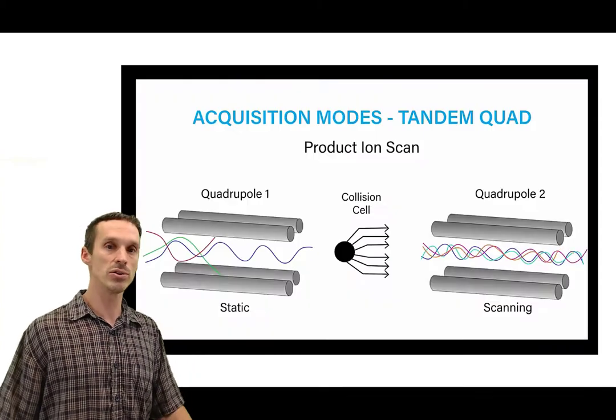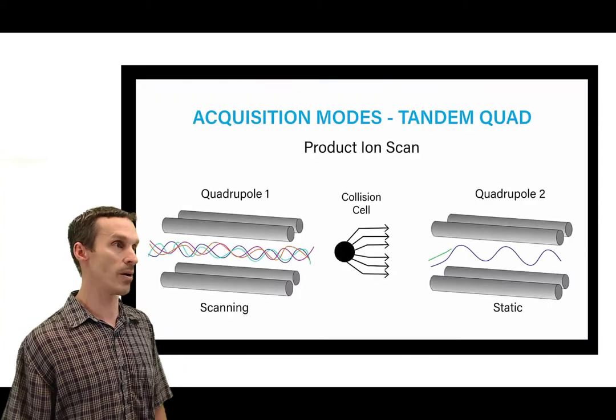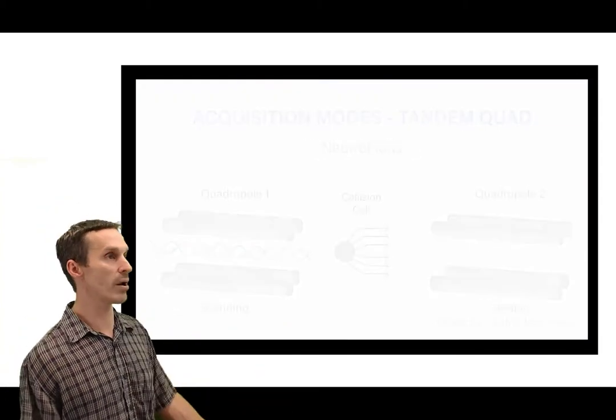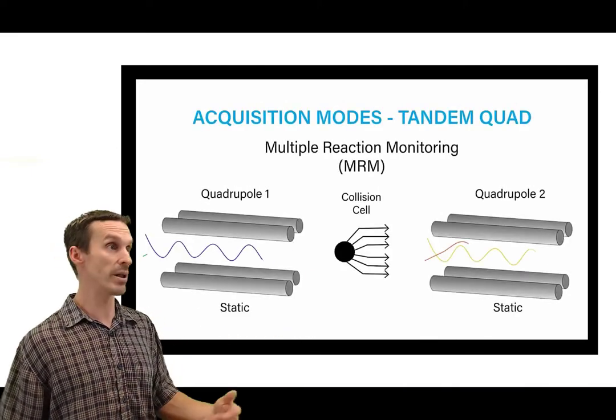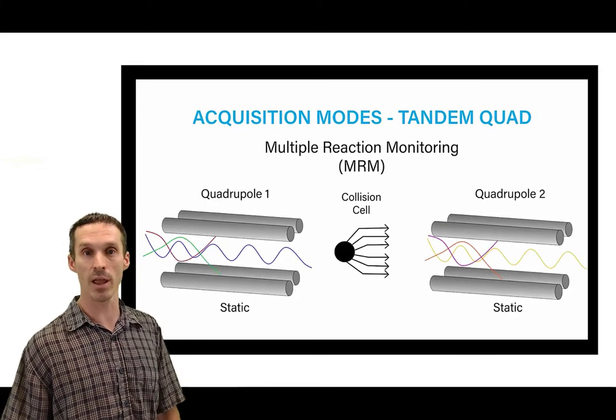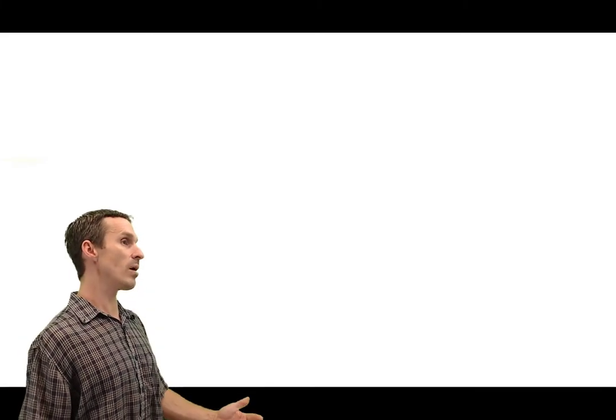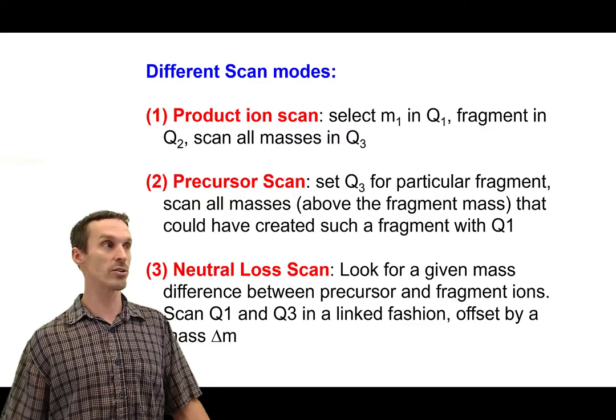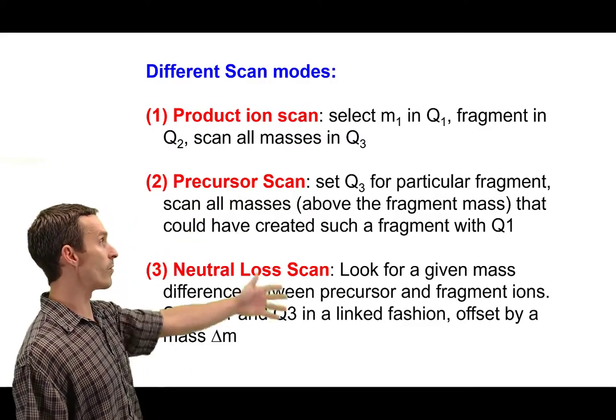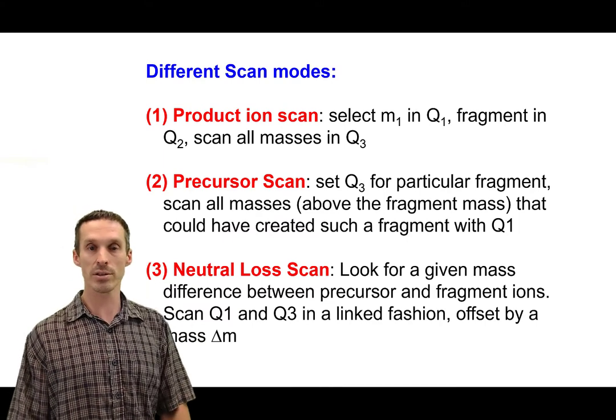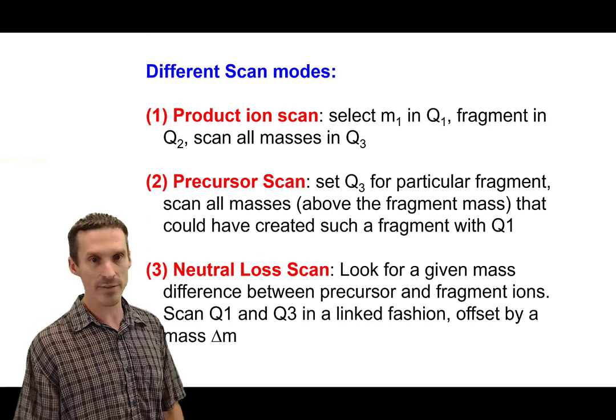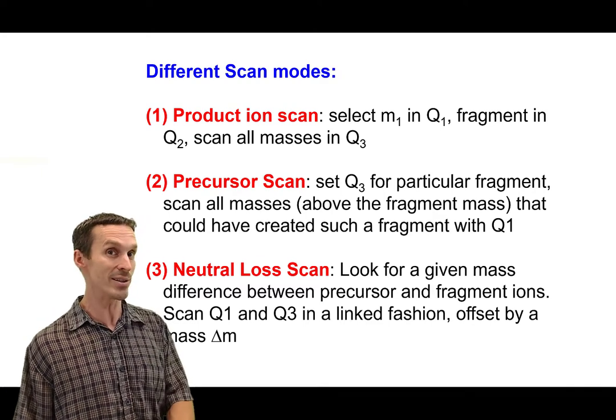With the triple quad you can do all kinds of different experiments. So you can do what we call a product ion scan, you can do neutral ion scans and then there's even more coming which we're going to talk about in the next video, the MRM scans. But for now I do want to go through the different types of scans that you can do with a triple quad instrument. Here they are, the product, precursor and neutral loss scans. So let's just go through them one by one. They're just subtle differences between them but they are quite distinct.